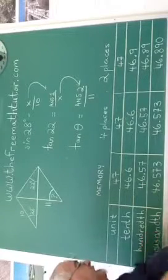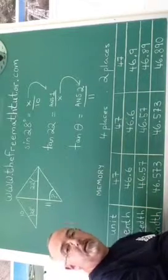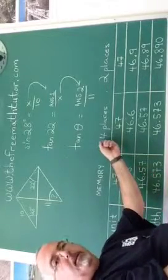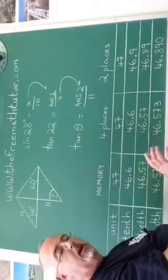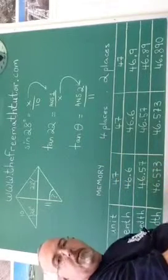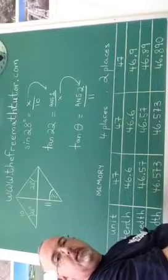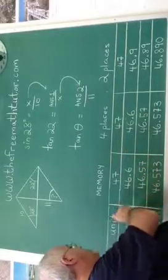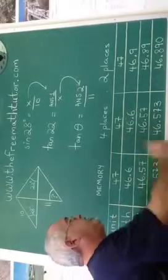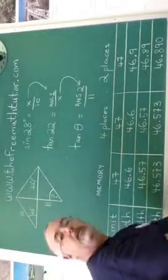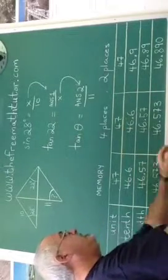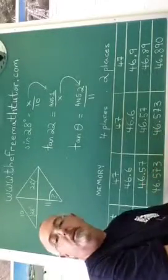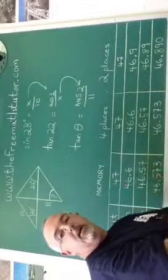Rounded to the nearest thousandth, it's also 46.57 degrees. If I round to four decimal places at every step, writing down the four-decimal-place answer and then using it in the next step, the answers rounded to the nearest unit, tenth, and hundredth are the same: 47, 46.6, and 46.57. It's only when I get to the nearest thousandth that it might start to deviate — and in this case it gives 46.573, which has still rounded to the right value.